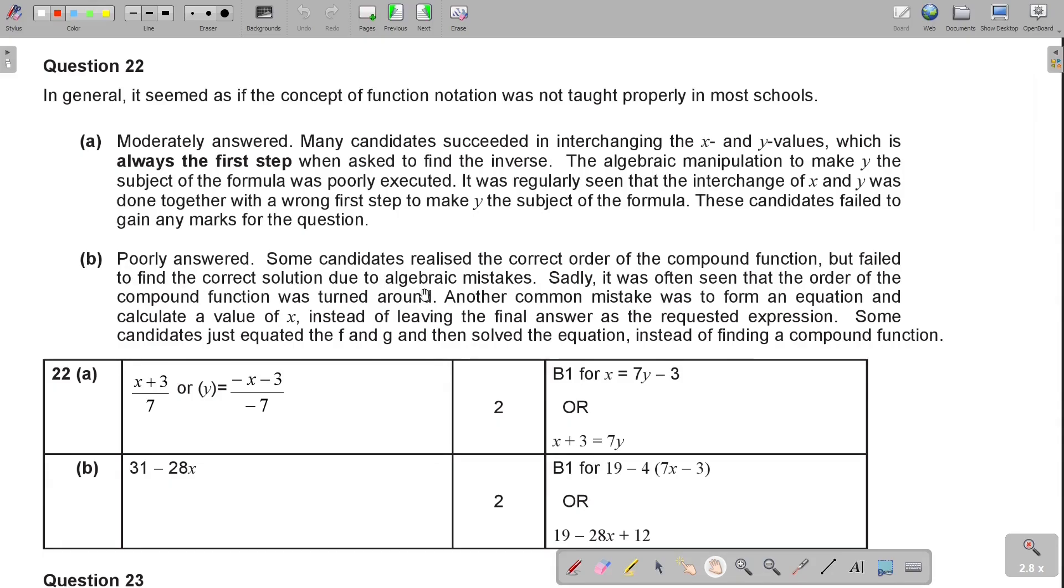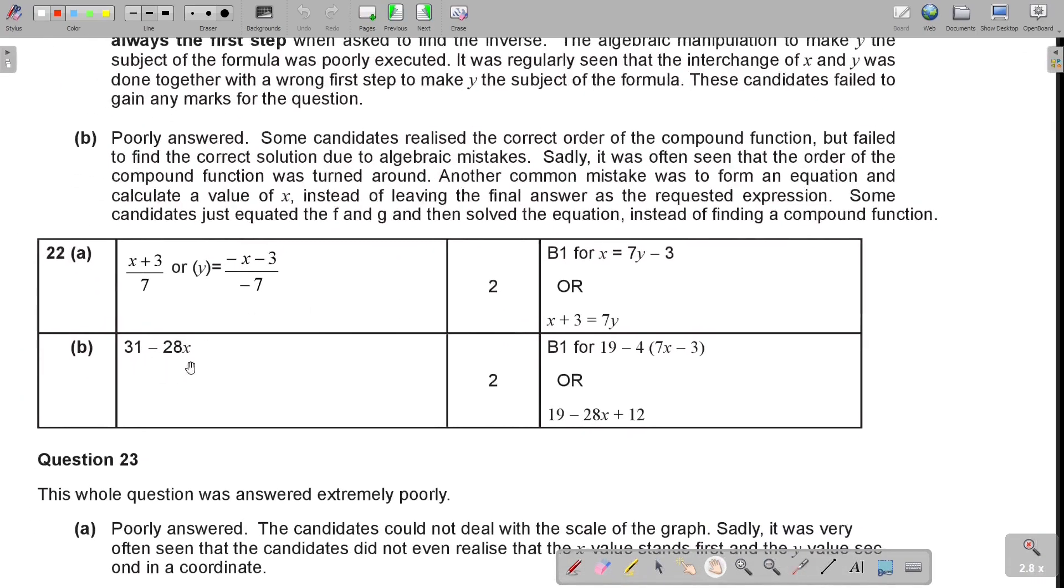And then number B, poorly answered. Some candidates realized the correct order of the compound function, but failed to find the correct solution due to algebraic mistakes. Sadly, it was often seen that the order of the compound function was turned around. Another common mistake was to form an equation and calculate a value of x. So now it's expression. Instead of leaving the final answer as the requested expression. Some candidates just equated the f and the g and then solved the equation instead of finding the compound function. And there is your final answer. And they gave you already a mark for just when you did the substitution, even if you didn't multiply it out correctly.